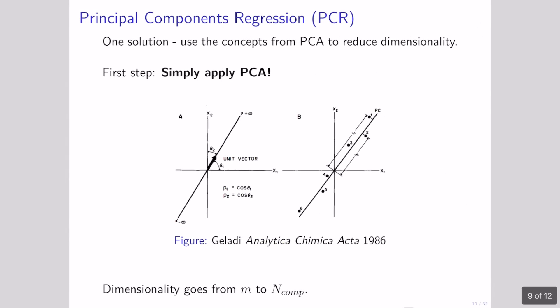The first method we're going to talk about is pretty simple given the tools you've already learned. Principal components analysis reduces down your data by looking for maximum directions of variation. For principal components regression, we simply reduce down our data by PCA and then perform multilinear regression to link our principal components to our output. So instead of having weights for individual variables in our regression model, we're going to have weights for how important each principal component is for predicting an output.